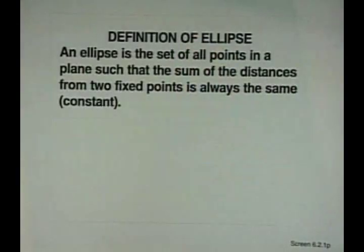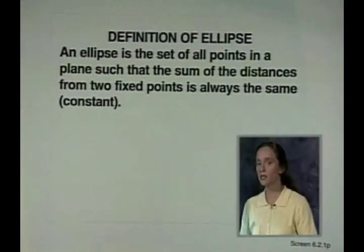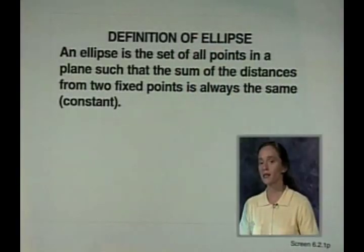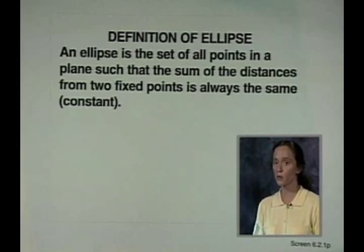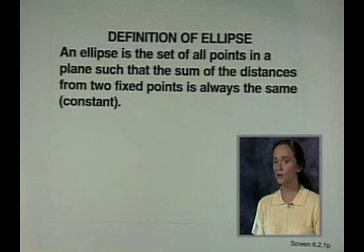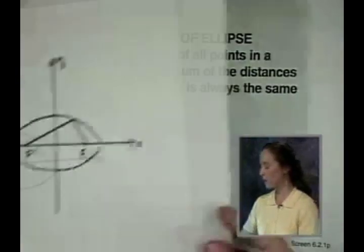Hi, I'm Kathy Stark. In this lesson we cover the last two conic sections: ellipses and hyperbolas. Let's begin with an ellipse. By definition, an ellipse is a set of all points in a plane such that the sum of the distances from two fixed points is always the same. The two fixed points are called foci.